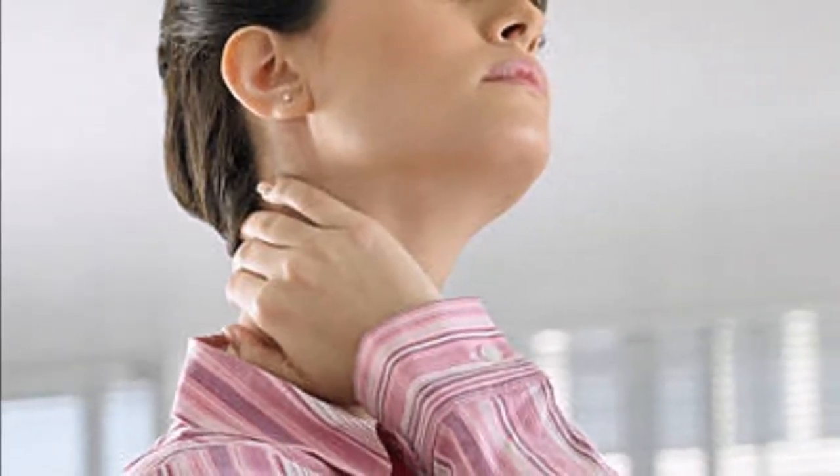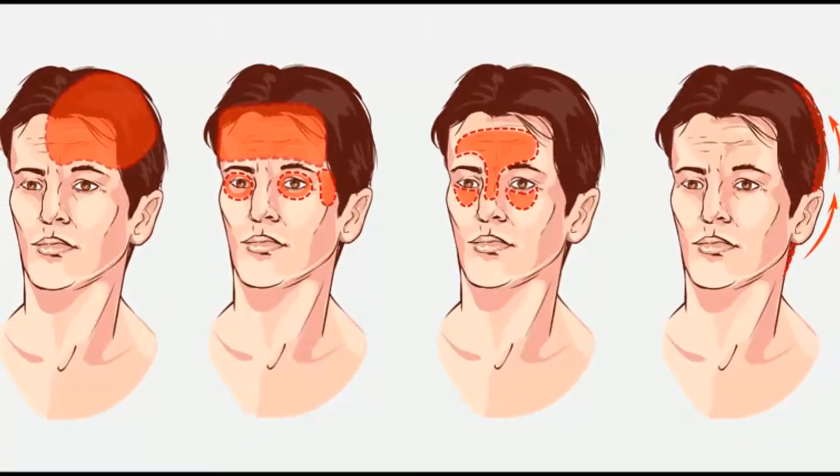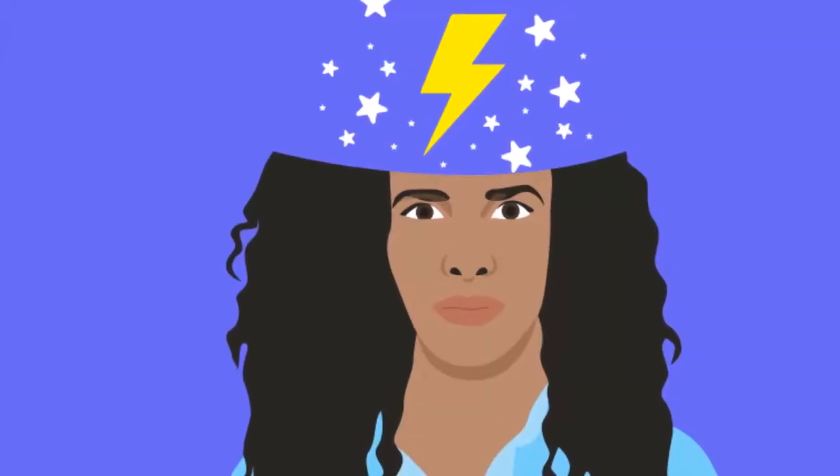6. Migraine. Migraines are characterized by sharp throbbing or pulsing sensations, and are normally accompanied by nausea, vomiting, and light or noise sensitivity. They can last from several minutes to several hours. In severe cases, people have reported experiencing visual hallucinations such as an aura, dust or flashing lights, disruptions in smell, touch and taste, or numbness. Migraines go away leaving you exhausted and unable to concentrate.